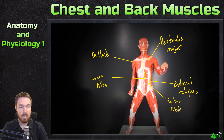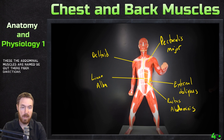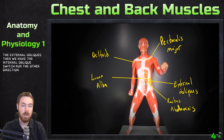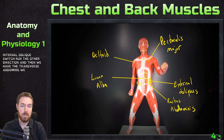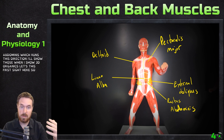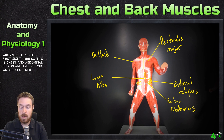The abdominal muscles are named via their fiber direction. We have the external obliques, then we have the internal obliques which run the other direction, and then we have the transverse abdominis which runs this direction — I'll show those when I show 3D Organon. So that's the chest and abdominal region with the deltoid on the shoulder.